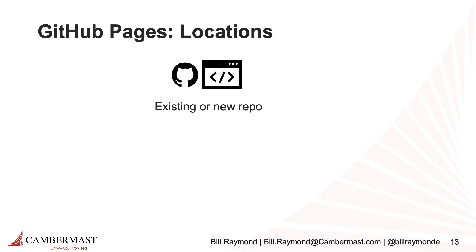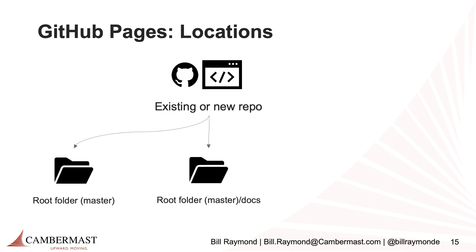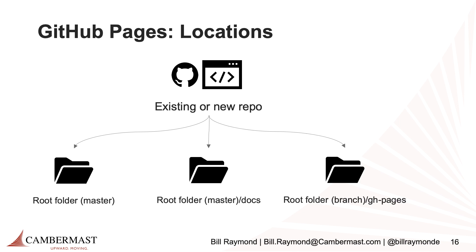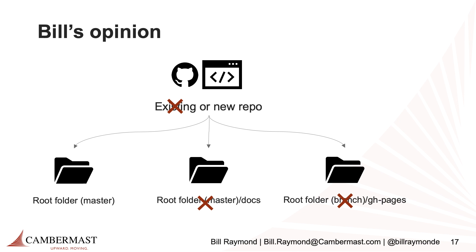Remember, GitHub Pages are HTML or markdown files, and that's code, so you need to store those code files somewhere. You can store them in an existing or a new repo. You can store your content in the master branch at the root folder, the master branch slash docs, or you can create a brand new branch called gh-pages.